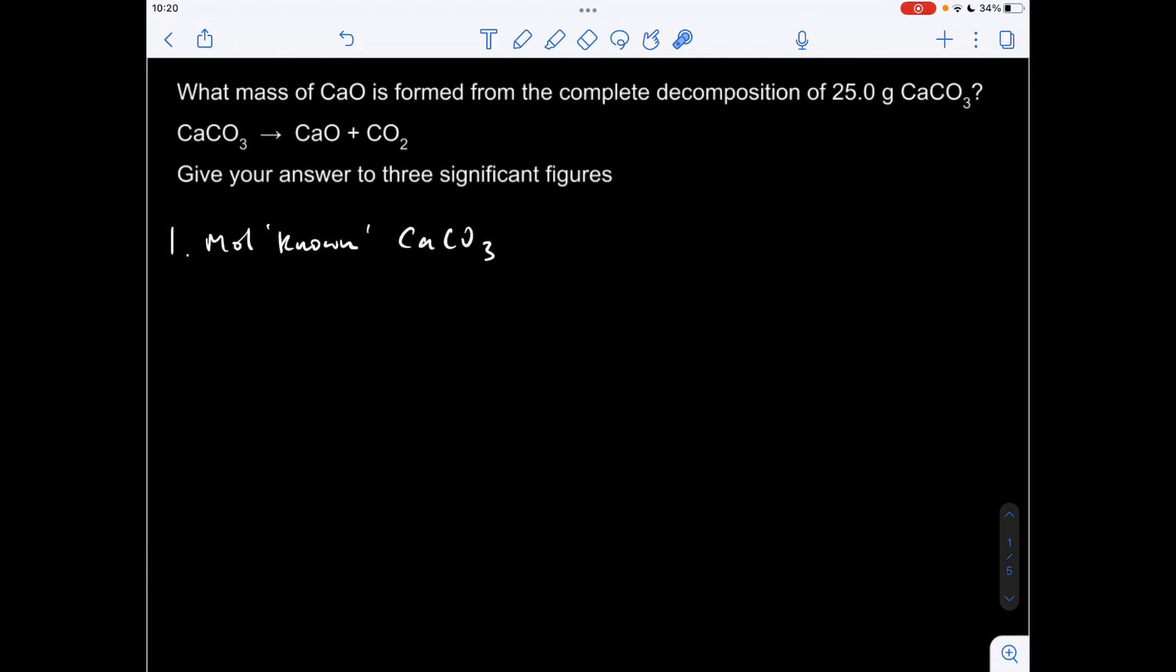So the first thing I want to do is calculate the moles of known chemical, remember that's my calcium carbonate in this question. So that's simply just mass over MR. So that comes out of this number here. I'm keeping the full number in my calculator. I don't want to round anything because I don't want to introduce what's called a rounding error into my final answer. So full number in the calculator, that's what the dot dot dot stands for.